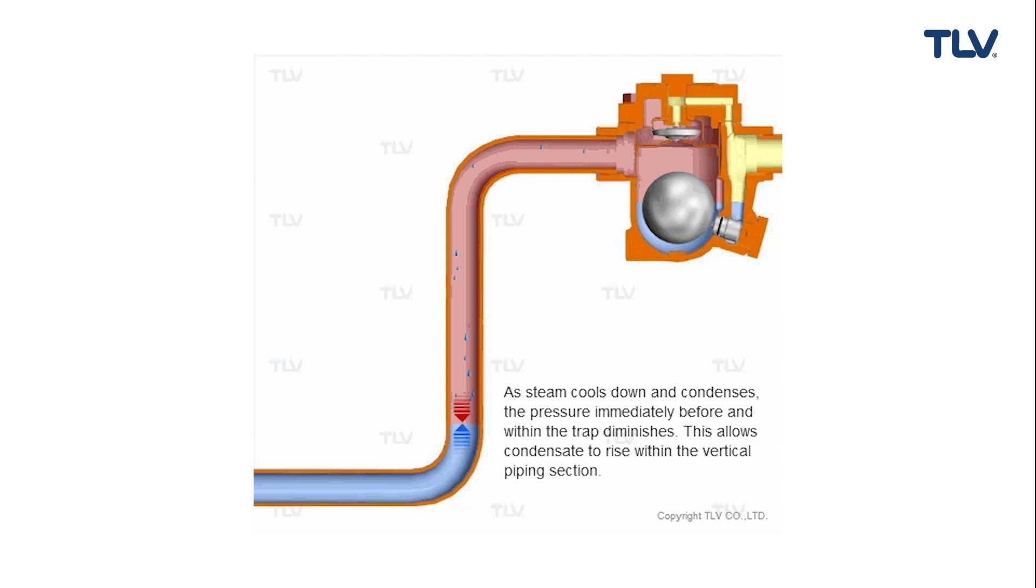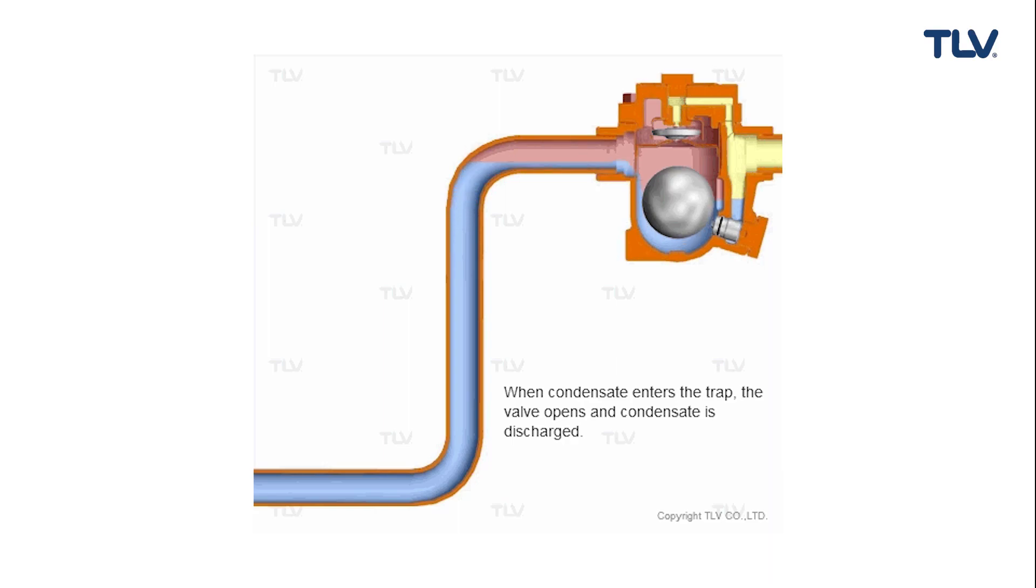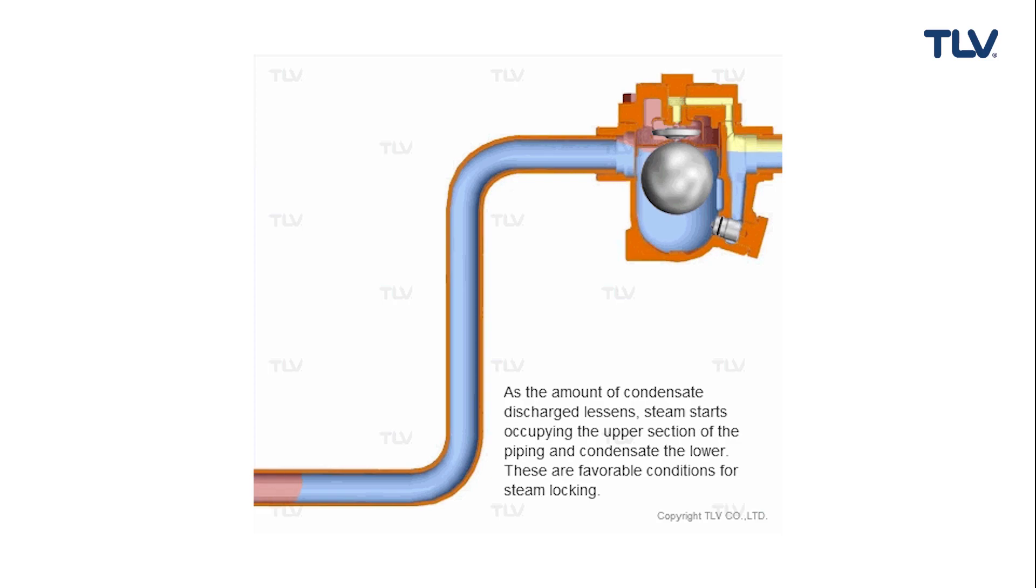A steam locked trap will eventually be able to discharge condensate again when the locked steam has condensed. In the meantime, however, it may cause condensate backup in piping and equipment. If the problem is not resolved, it can then reoccur at every following discharge cycle.